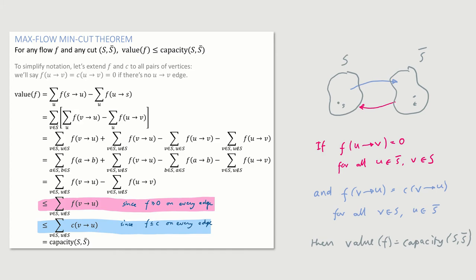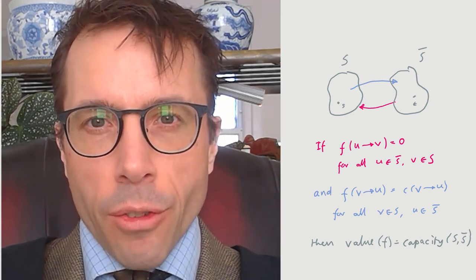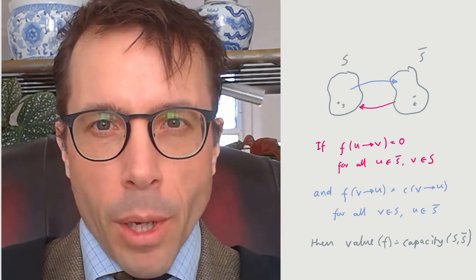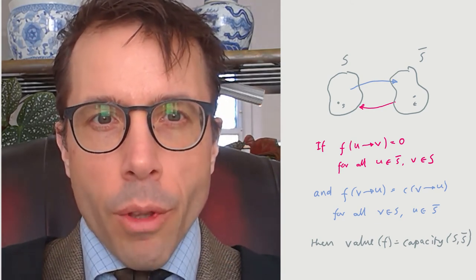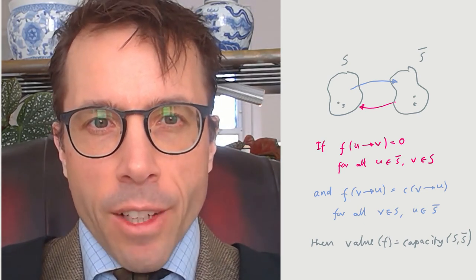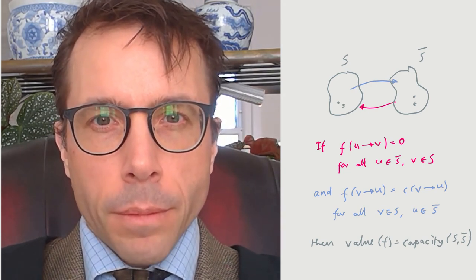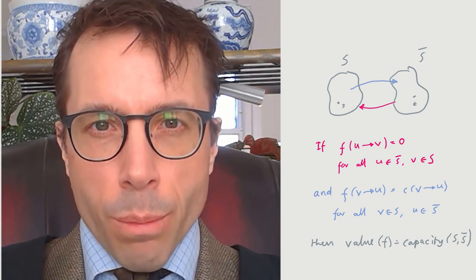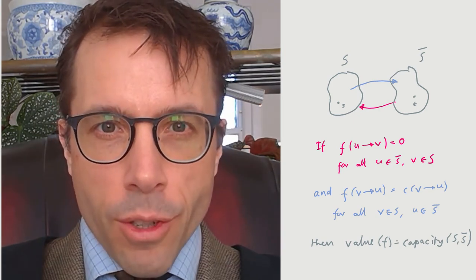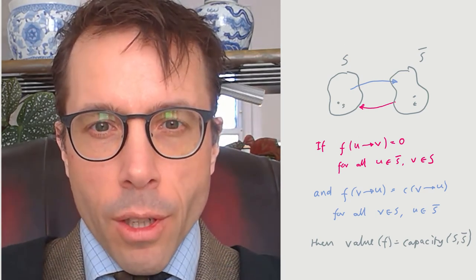Let's just repeat that. What we said is, if we manage to produce a flow F and a cut set S S bar, such that the flow on all edges from S to S bar is equal to capacity, and the flow on all edges from S bar to S is equal to zero, then we know that the value of our flow is equal to the capacity of our cut. And then, as we reasoned before, our cut acts as a certificate which proves that our flow is a maximum flow. And that is how we're going to prove that the Ford-Fulkerson algorithm is correct. We'll simply look at the flow it finishes with, and we'll look at the set that it discovered during the final sweep of breadth-first search, and we'll verify that these two inequalities are tight, and then we're done.